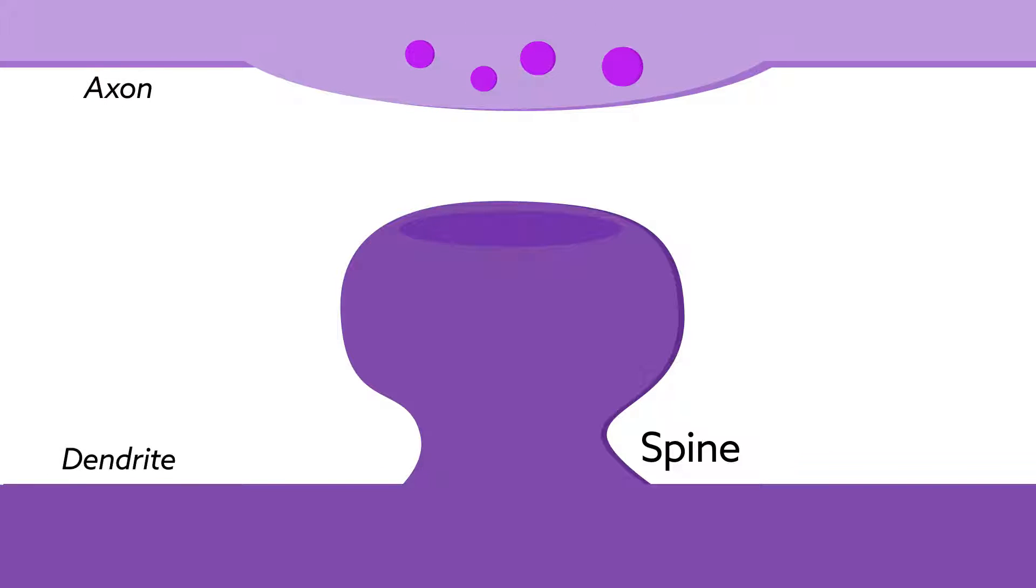When synapses are very active, like they are during learning or a memorable event, molecular signaling cascades turn on.